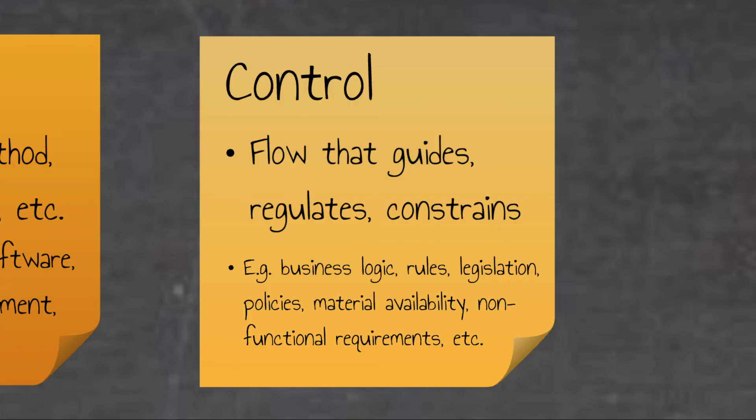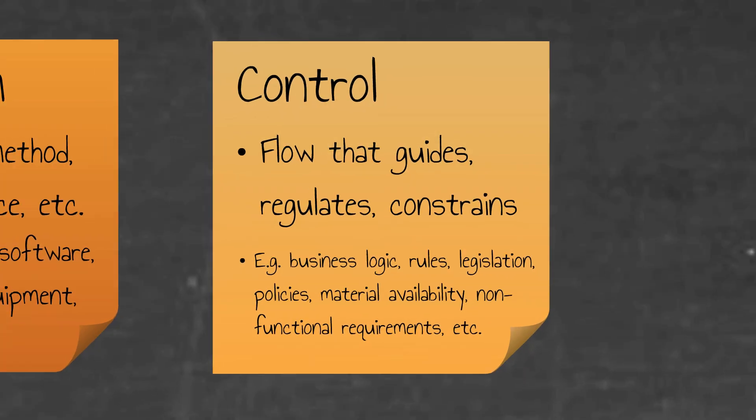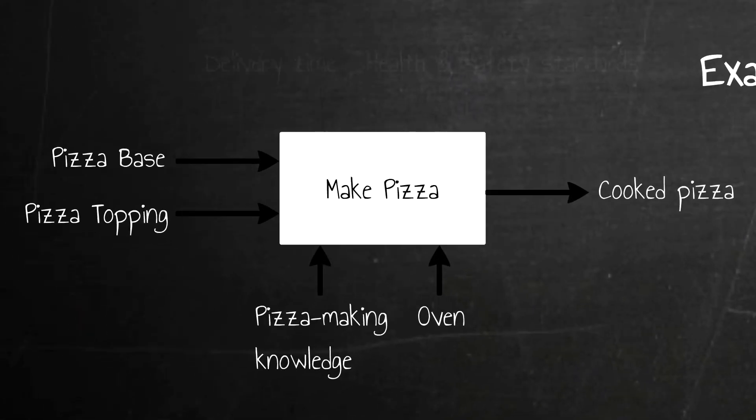In the area of business analysis, controls sort of roughly equate to non-functional requirements, that is, qualities that a function fulfills. And just to further exemplify the notion of control, for our make pizza function, a possible control could be delivery time and health and safety standards.